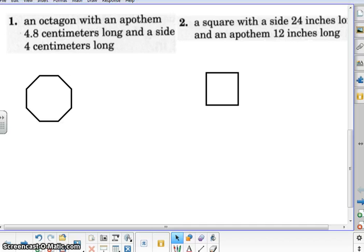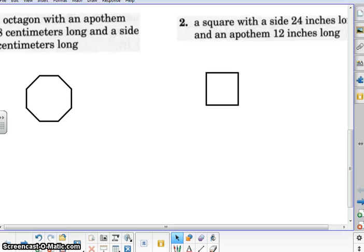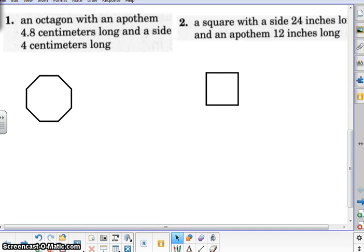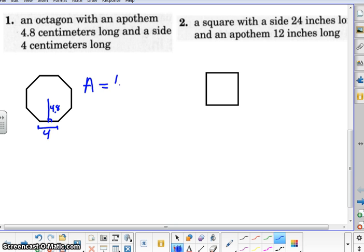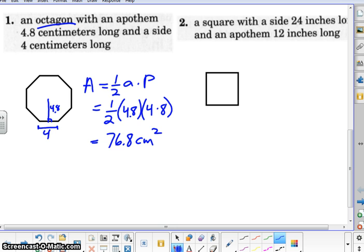The first two are really nice examples here because on this octagon, the apothem is already given. So we can assume that this is going to be a regular polygon if it's given an apothem. So we have an octagon with an apothem that is 4.8, and it says a side at 4 centimeters long. So if the area is 1 half apothem times perimeter, we have the apothem given to us, that's 4.8, and then the perimeter is 4 times 8 because we have an octagon. And when you multiply all that together, you're going to get 76.8.